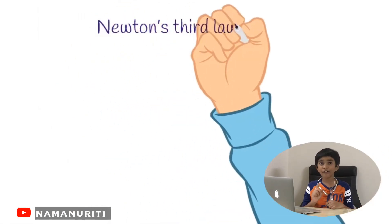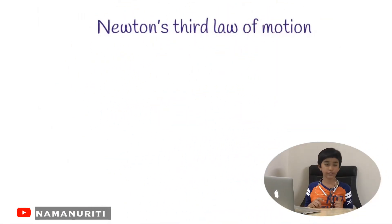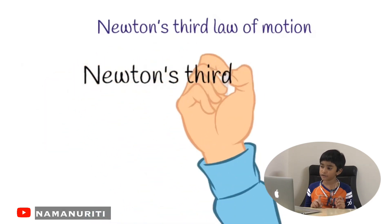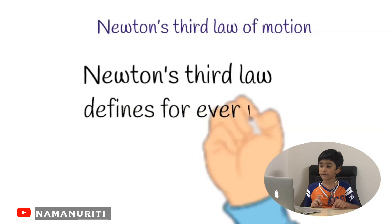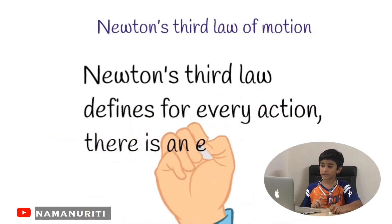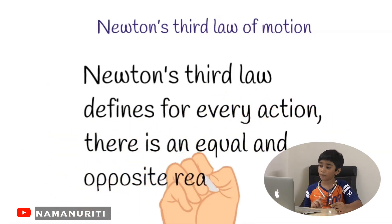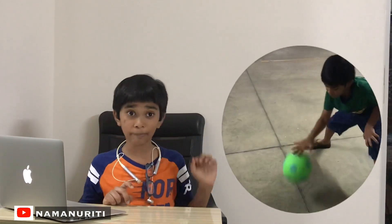Friends, now let's see Newton's third law of motion. Newton's third law defines: for every action there is an equal and opposite reaction. Let's take this example — we have a ball.